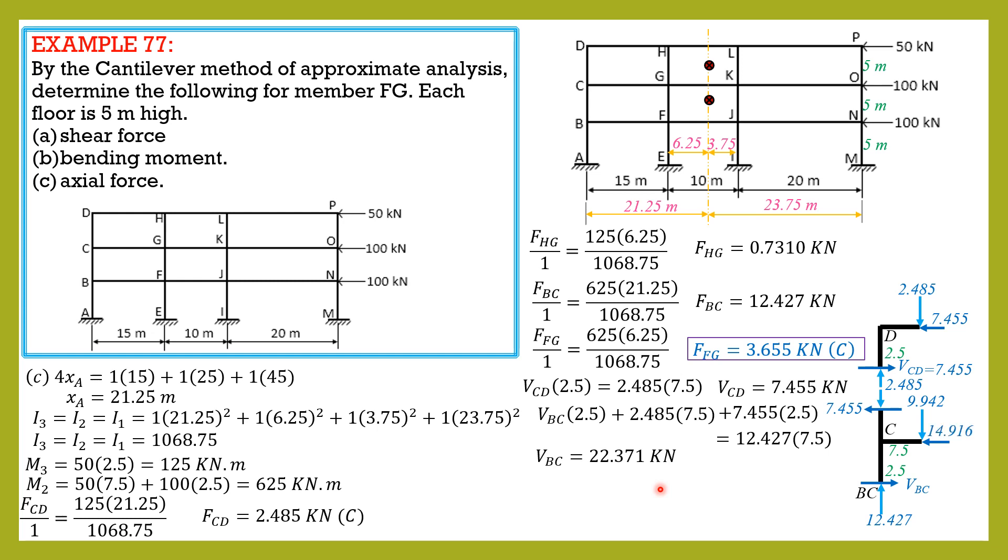Therefore, this is 22.371 minus 7.455. That's why you have 14.916. Again, shear in BC 22.371 minus 7.455 equals 14.916. Let's have that on the next slide: 22.371.